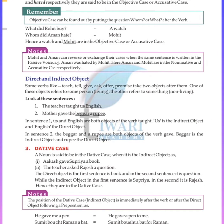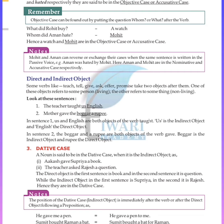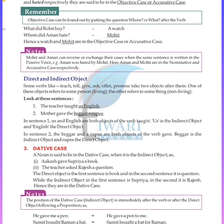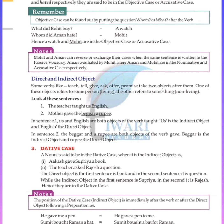Second is the objective case or accusative case — they are the same thing. A noun or pronoun that is the object of a verb is in the objective case. For example: Rohit bought a watch and a car. Amun hated Mohit. In the above sentences, a watch and Mohit are the objects of the verbs bought and hated respectively, so they are in the accusative case.